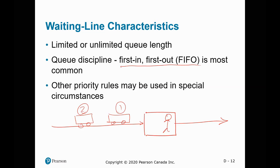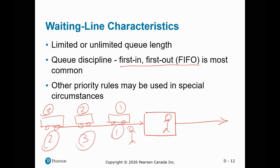There are other models. For example, the shortest processing time first: one customer wants only their tires washed, another wants a full wash, a third wants only the inside cleaned. You may decide to do the shortest job first and the longest job last. The way you decide to serve your customers is called the discipline.